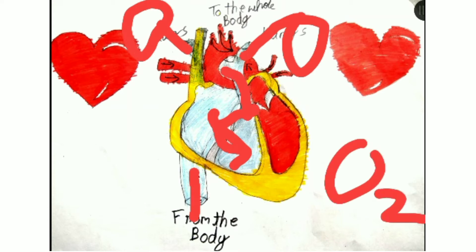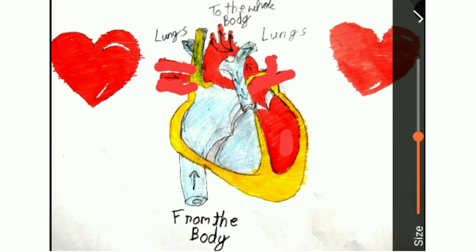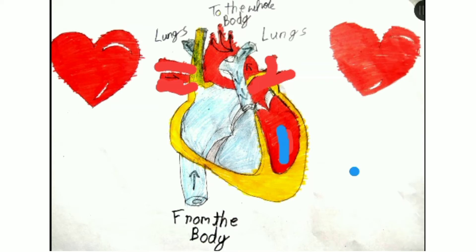Then the lungs mix it with oxygen. And then it transforms back from this to narrow arteries. Then it comes to this — I will change the color — and then through the aorta to the whole body from these three thin nerves.